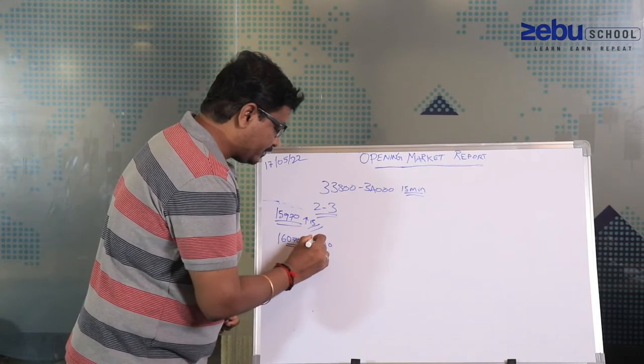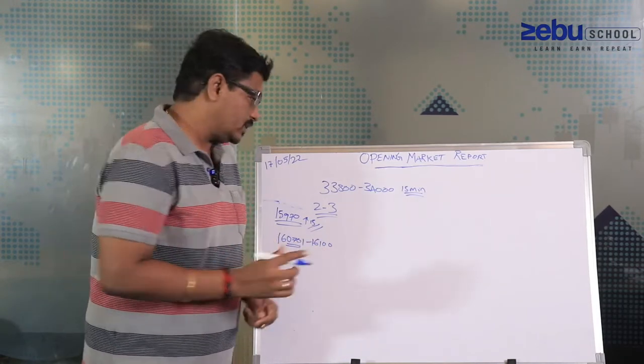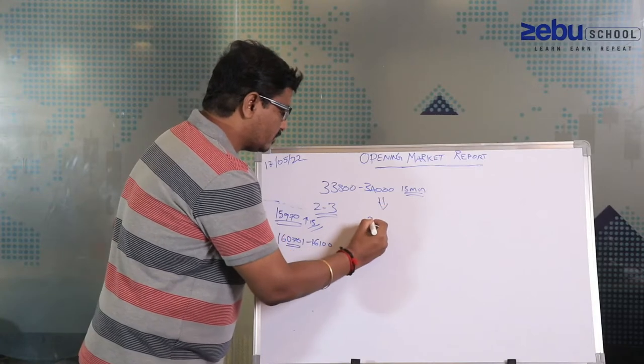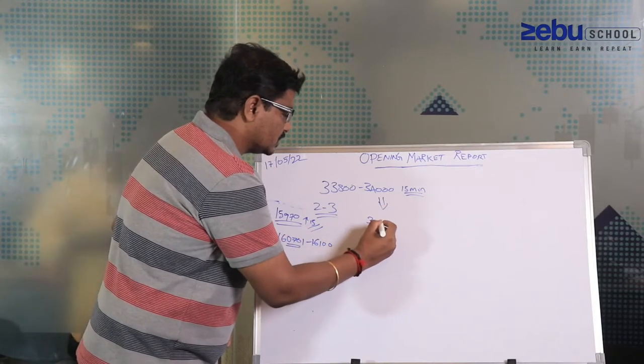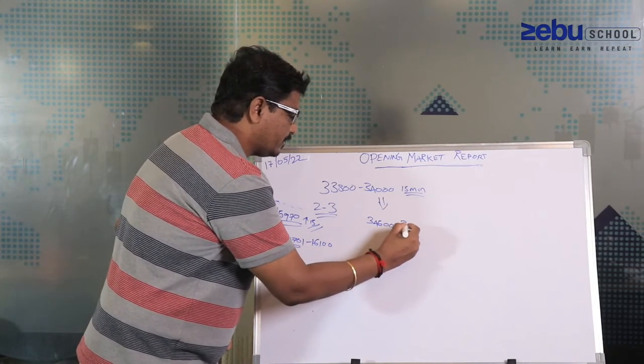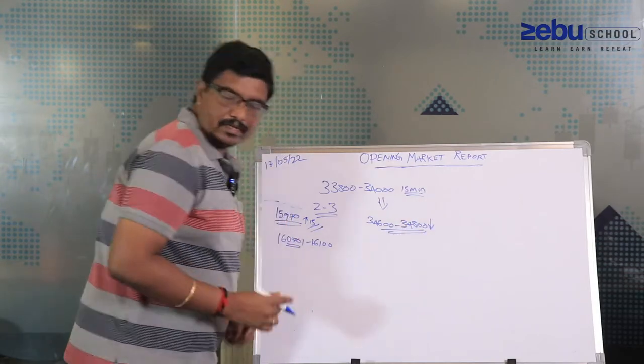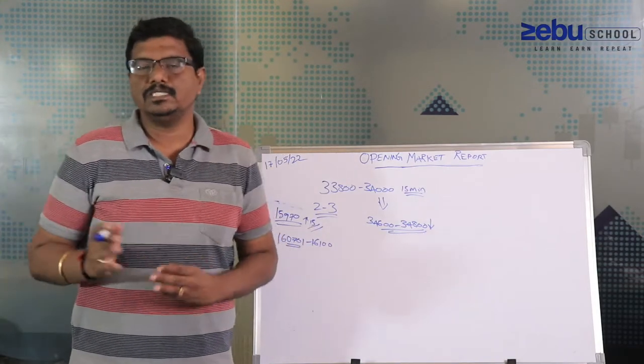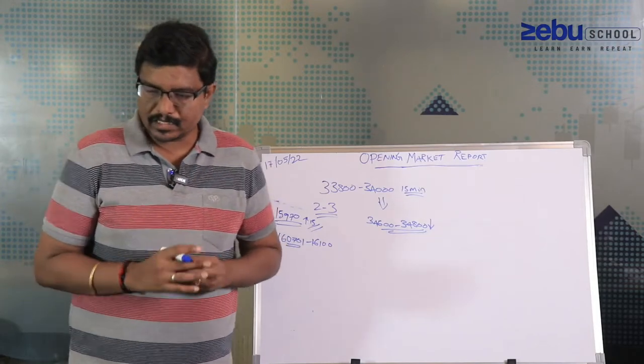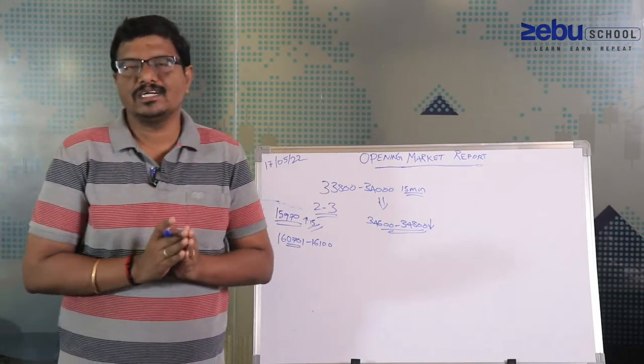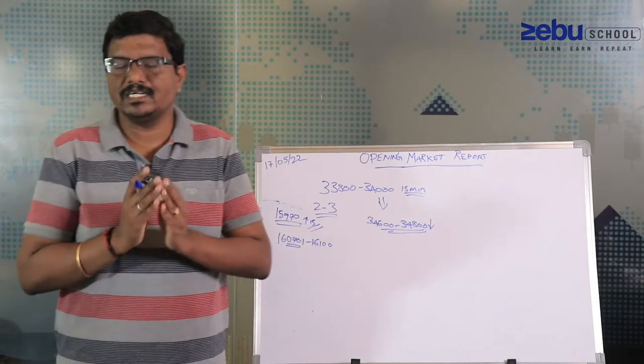This is the key level for Nifty. For Bank Nifty, it can face resistance at 34,600 to 34,800. Remember, above this level, it will turn positionally bullish again based on yesterday's report.